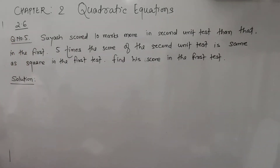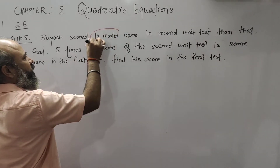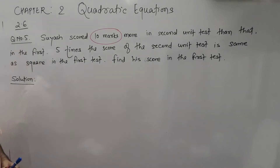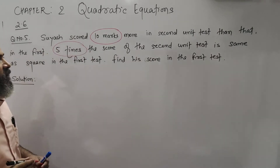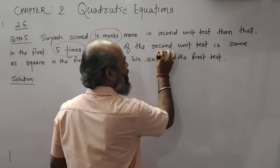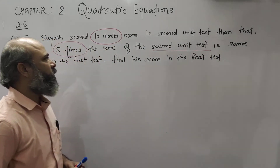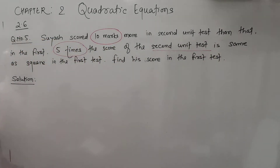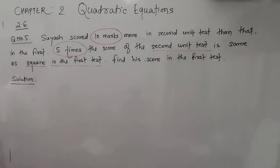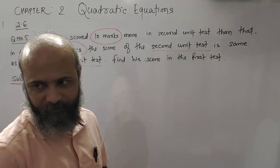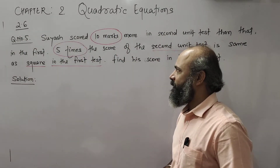Question number 5 states: Swiss scored 10 marks more in the 2nd unit test than in the 1st unit test. 5 times the score of the 2nd unit test is the same as the square of the score in the 1st test. Find his score in the 1st test.